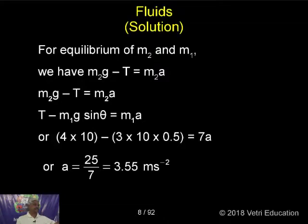m₂g minus T is equal to m₂a, because that's where the body moves. The first one: T minus m₁g sin theta is equal to m₁a. Or substitute the value.